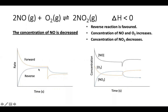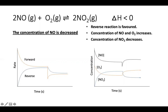On the rate versus time graph, the forward reaction is shown in red and the reverse reaction in blue. When the disturbance occurs — NO being decreased — the reverse reaction is favoured, so the blue line jumps above the red line. Both then drop and flatten out at a new equilibrium.